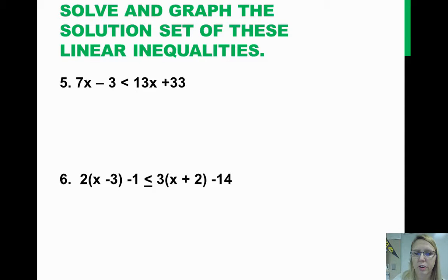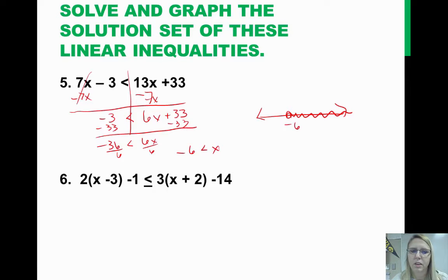Now, these are a little bit harder. I want you to try this one on your own, number 5, and stop the video and come back and check your answer. Okay, so on this one, I get negative 6 is less than x. So it's an open dot at negative 6, and it's going to the right.